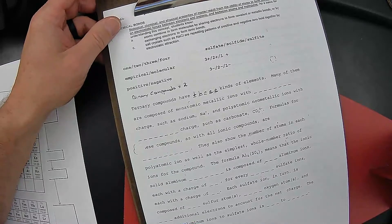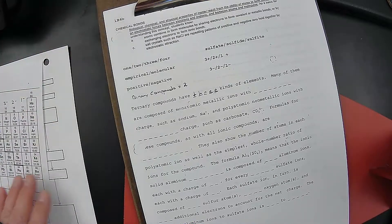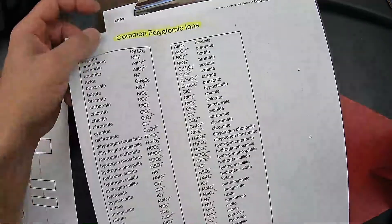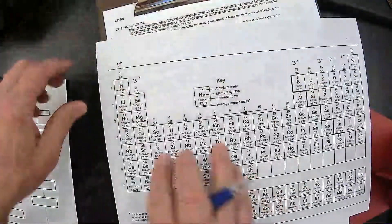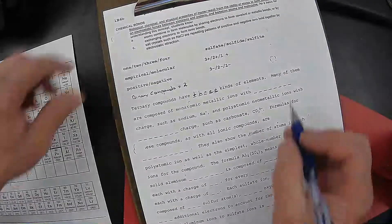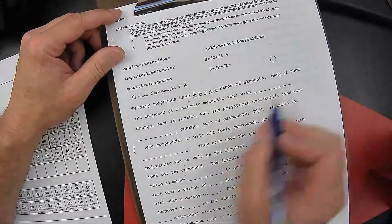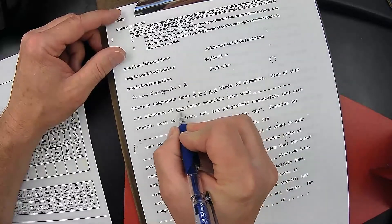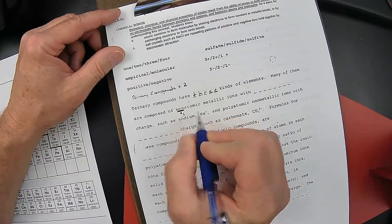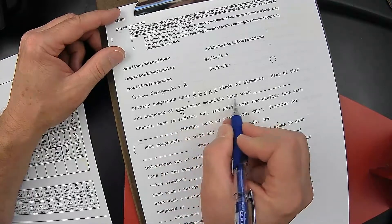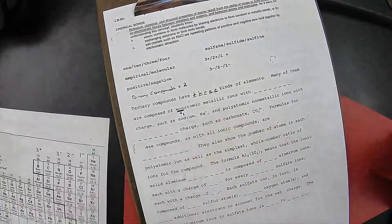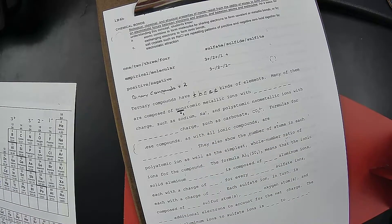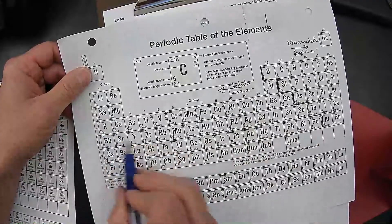What we're going to be dealing with is a polyatomic ion, a group of atoms, with one other atom. Many of these ternary compounds are composed of mona, mon standing for one. So one atom that's a metal ion. We're dealing with a metal, in which case we have an atom that's losing electrons.